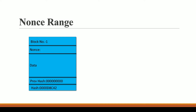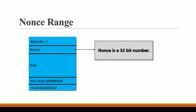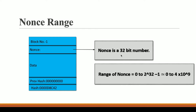Since this nonce is a number, it has a particular range. This nonce is a 32-bit number. If you are not from a computer science background, you might not be familiar with this concept — just search for it online. For now, what you need to know is that the range of the nonce is 4×10⁹, meaning with this 32-bit number we can generate from zero up to approximately 4 billion nonces.